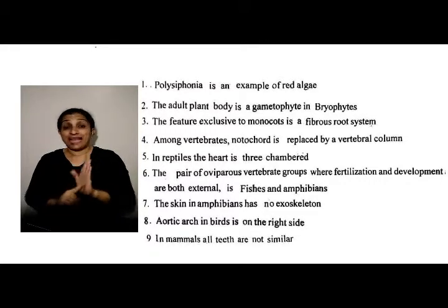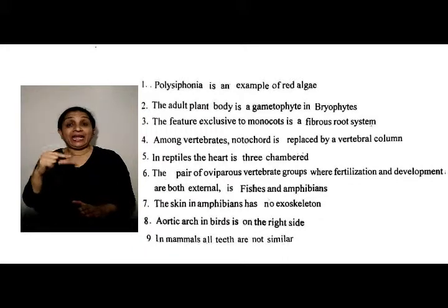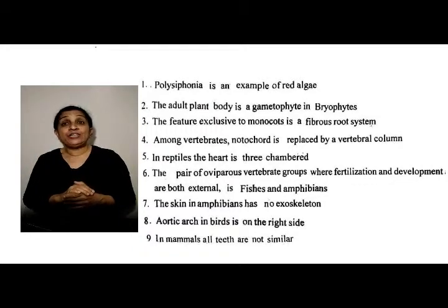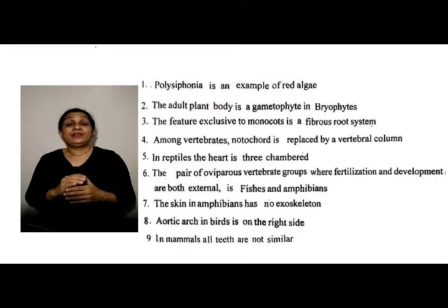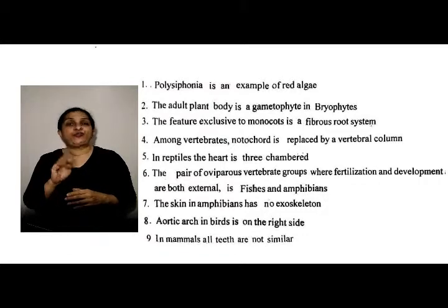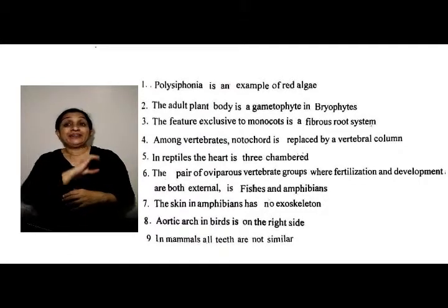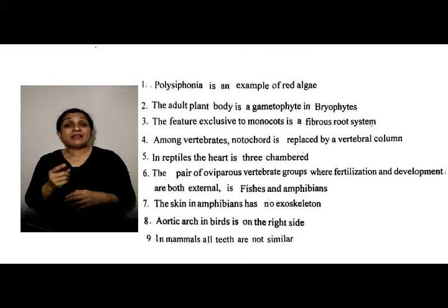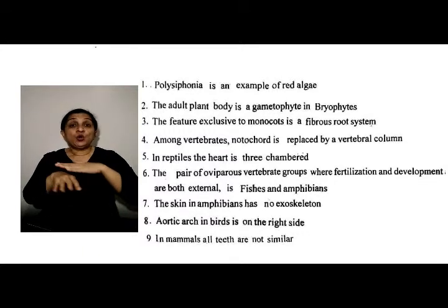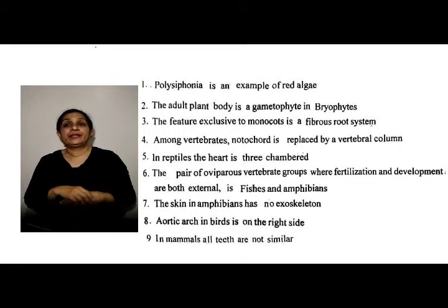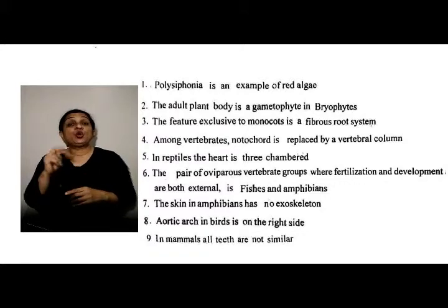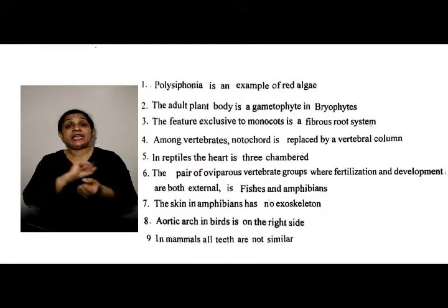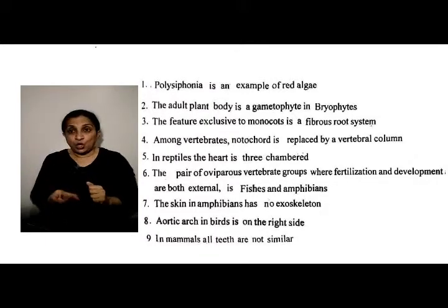Examples of red algae are Polysiphonia. The adult plant body is a gametophyte in bryophytes. The characteristic found in monocots is a fibrous root system. Among vertebrates, the notochord is replaced by a vertebral column.